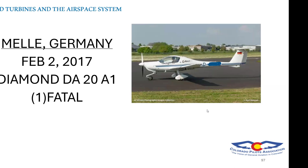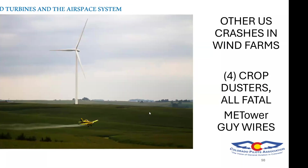On February 2, 2017, a Diamond DA20-A1 struck a turbine in a wind farm in Neale, Germany — one fatality, one person on board. According to the news report, this was the first time a plane had run into a wind turbine in Germany. There have also been other U.S. crashes involving four crop dusters, all fatal, involving meteorological tower guy wires. In one case, a pilot was coming up after releasing herbicide, flying into the sun, and did not see the tower or realize how close he was to the guy wire.